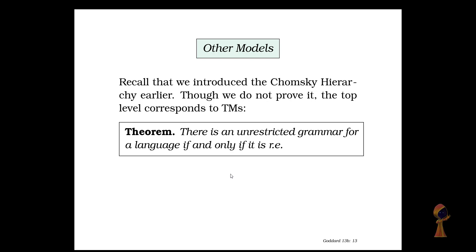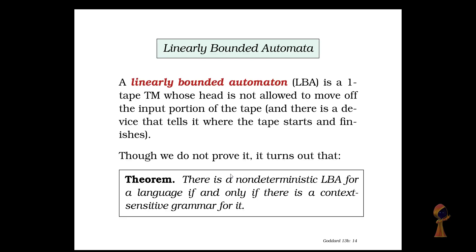Now there are other models of computation as well. These include an unrestricted grammar and other grammars. The top level of the Chomsky hierarchy corresponds to Turing machine. There is a theorem which says that there is an unrestricted grammar for a language if and only if it is recursively enumerable.